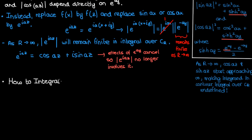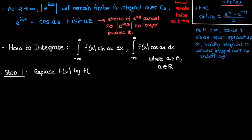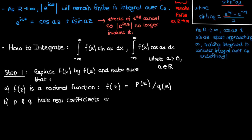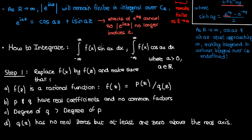Let's go over the technique for dealing with improper Fourier integrals. Step one: replace f(x) by f(z) and ensure that f(z) is a rational function — the ratio of two polynomials p and q — with real coefficients and no common factors, that the degree of q is greater than the degree of p, and that q(z) has no real zeros but at least one zero above the real axis. The reason q cannot have real zeros is that real zeros would create issues keeping the integral finite over the real line.